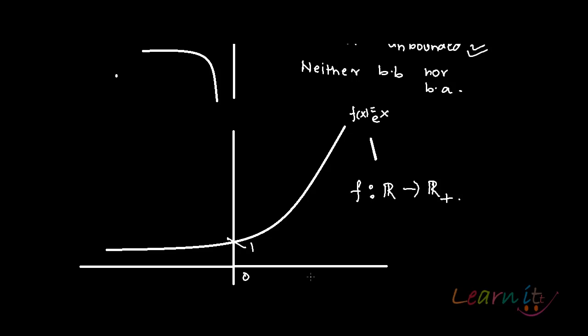Now, this is again an unbounded function. Why? Because its image set, what is the set of its image? It is 0 to infinity. It is bounded below by 0, but not bounded above at all. So, that is why this set will be unbounded because the range is 0 to infinity, all positive. So it is bounded below by 0, but not bounded above.